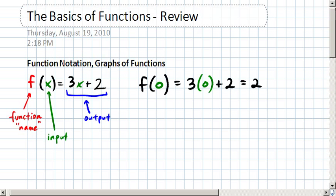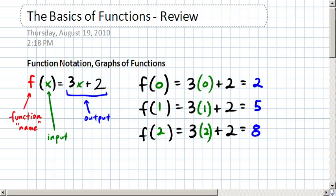So if I make x 0, then the output in this particular case is going to be 2, because 3 times 0 plus 2 is 2. If I do that 2 more times, with x being 1, I'll get an output of 5. And then with x being 2, I'll get an output of 8.